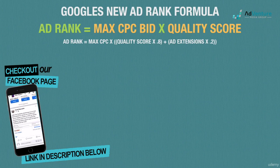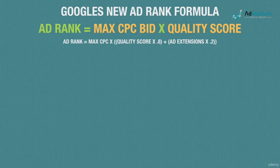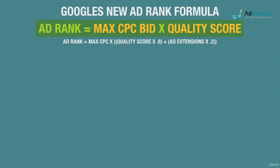Whether or not that number is precisely accurate, we can be confident it's not much more than that. Because so many advertisers are using ad extensions and it's a relatively small factor, we'll continue evaluating example scenarios with the primary formula: ad rank equals max CPC bid times quality score.